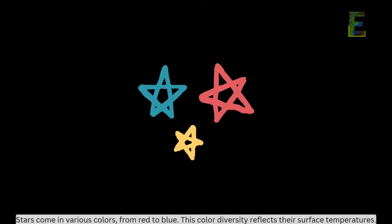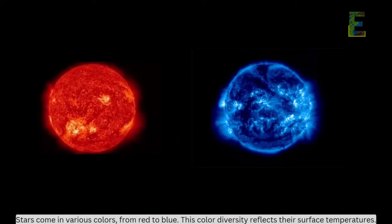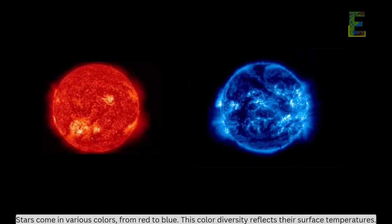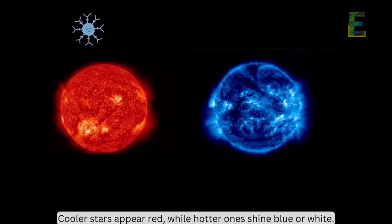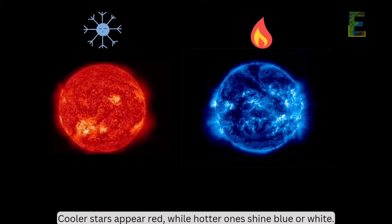Star colors: Stars come in various colors, from red to blue. This color diversity reflects their surface temperatures. Cooler stars appear red, while hotter ones shine blue or white.